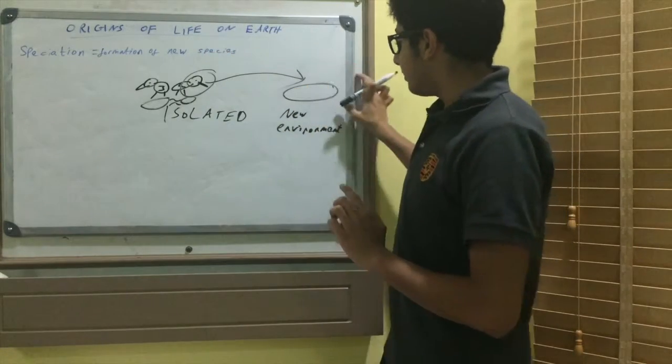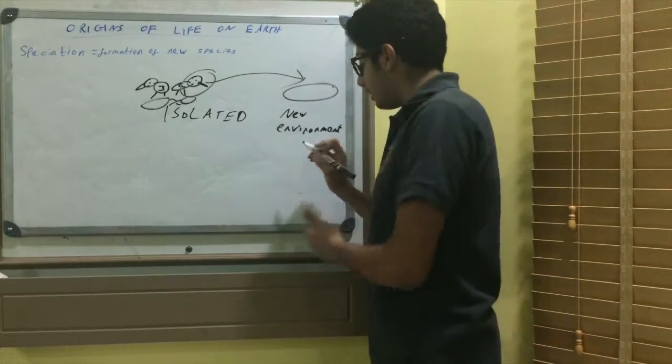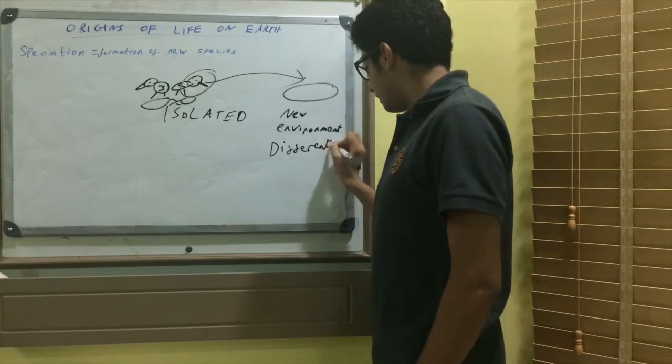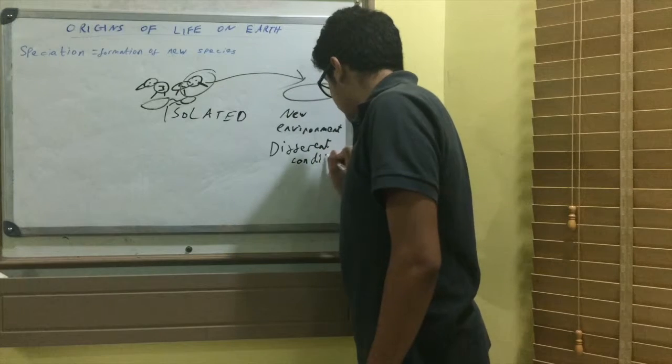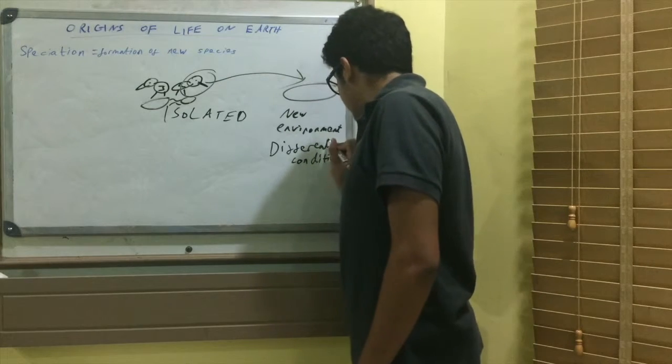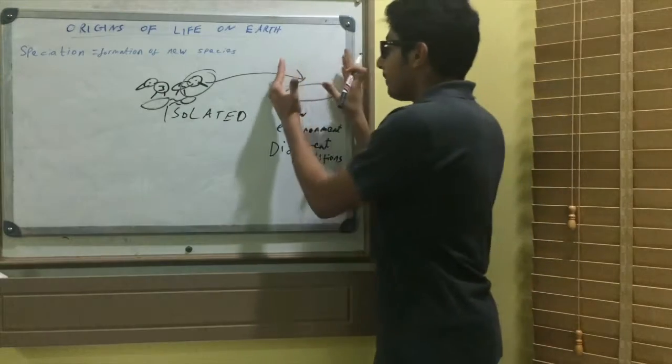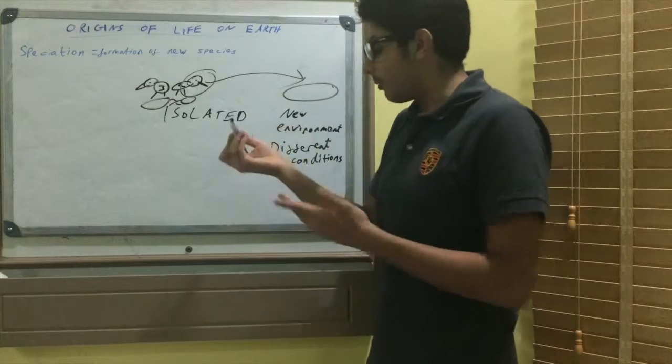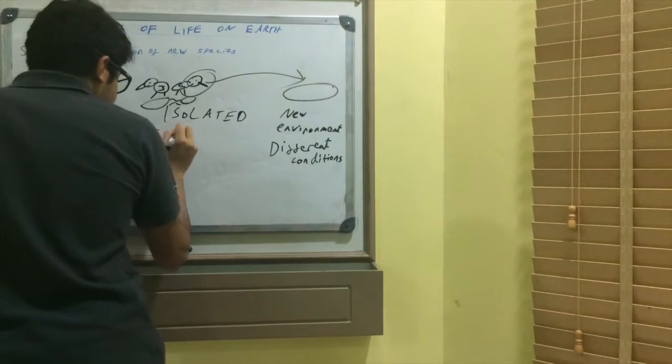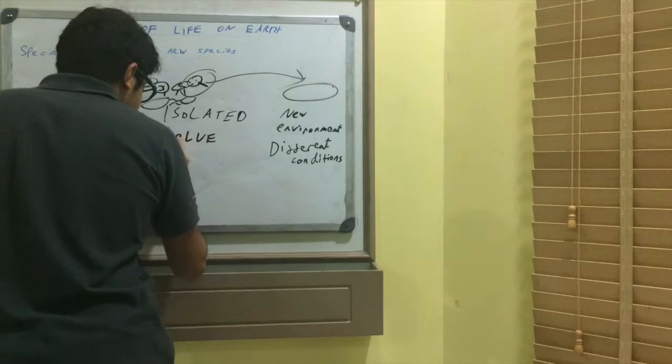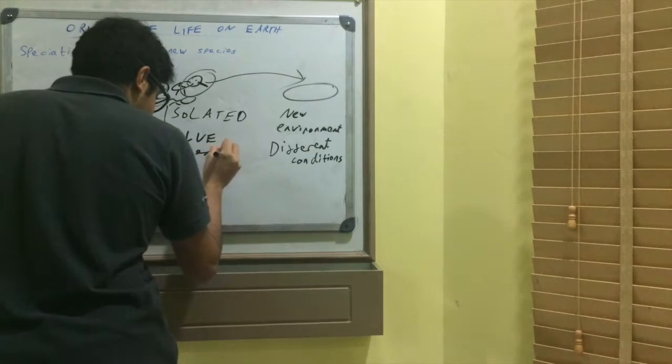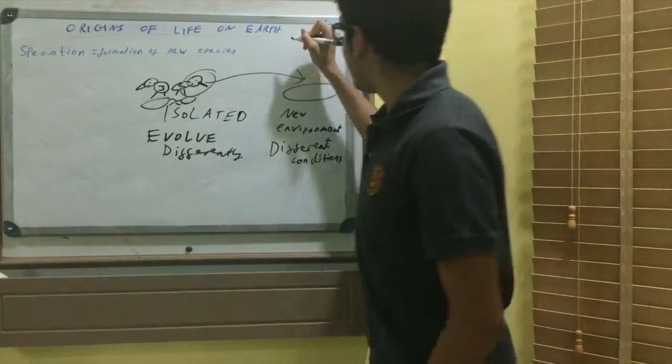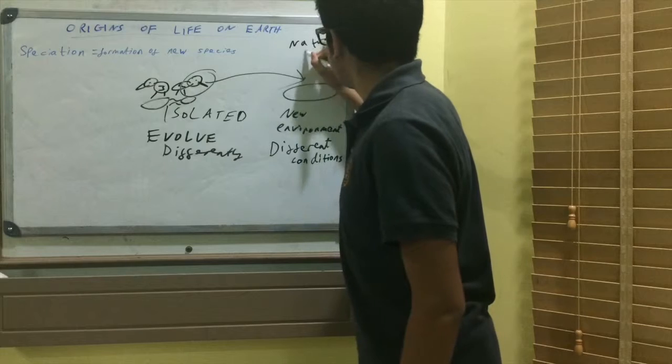If it is a geographical event, they will have separate environments. The one that migrated will have a new environment and therefore different conditions. And because of these different conditions, this population will evolve differently from that one. How? By a process of natural selection.